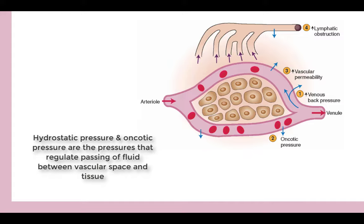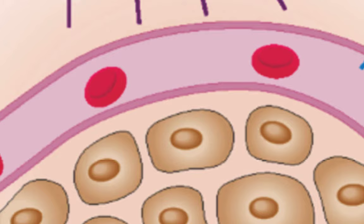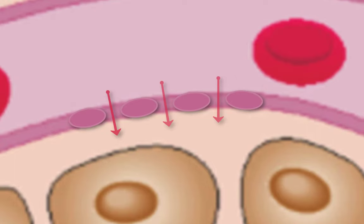Normally the endothelial cells of the capillary are in contact with each other, preventing much fluid from passing from the blood to the tissue. However, in case of inflammation, chemical mediators are released promoting contraction of these endothelial cells, causing them to shrink. This shrinkage opens spaces between the endothelial cells, allowing an extra amount of fluid to pass to the tissue. That is why inflammation is associated with development of edema.